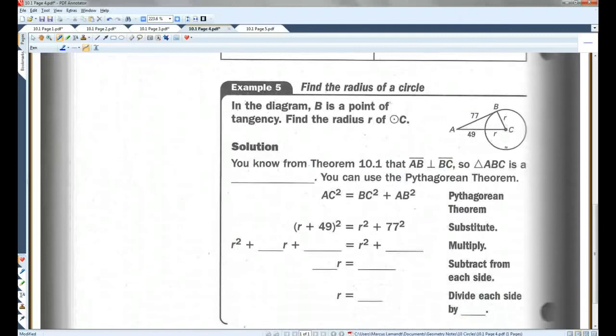Example 5. In the diagram, B is a point of tangency. So we know that this is a point of tangency. Find the radius R of circle C. So they're telling us that this is a right angle. We know, or you know from theorem 10.1, that AB is perpendicular to BC. So triangle ABC is a right triangle. You can use the Pythagorean theorem.